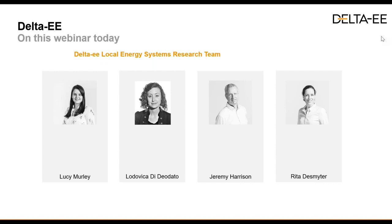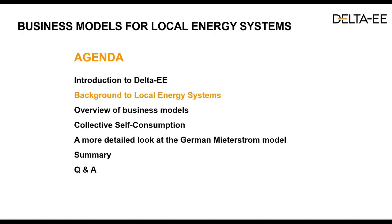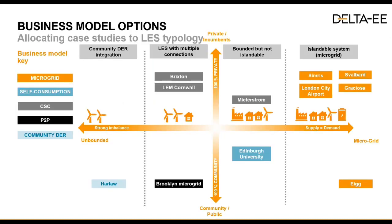Moving on to background on local energy systems — the question we keep getting asked is how people can make money out of local energy systems. One of the challenges in answering that is that different people have different definitions of what actually constitutes a local energy system. We developed this typology when we first launched the service last year, trying to make sure the case studies we come across fit within this matrix so we understand the complexities and specific characteristics of the various business models.